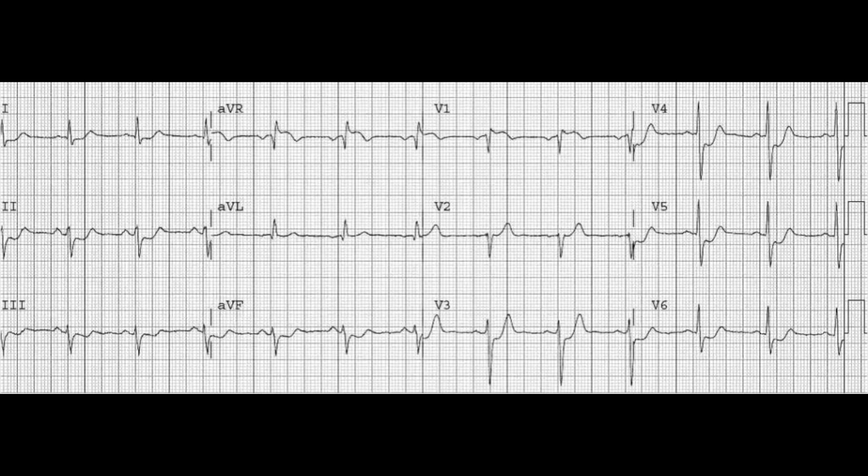Part of the reason for that is that AVR tends to look specifically at the right ventricular outflow tract as well as the intraventricular septum, which tends to be supplied by the proximal parts of the left coronary artery. We can also see elevation in V1, which can be indicative of some ischemia to the septum, further increasing our suspicion that this patient is potentially having infarcted tissue around the septal area and the right ventricular outflow tract — suggestive of a left main coronary artery occlusion.